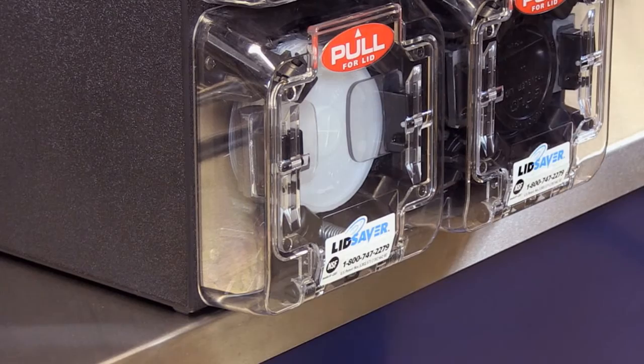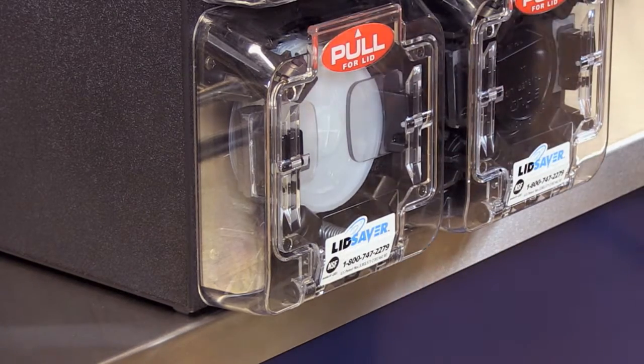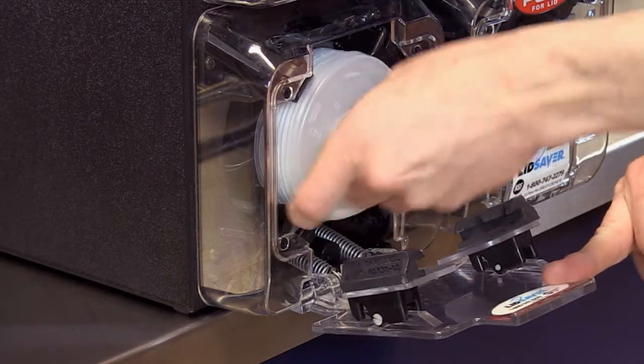All right, today we're going to show you how to replace the claws using the Lid Saver Claw Kit. So the first thing you're going to do is open the door and get the lids out of the way.